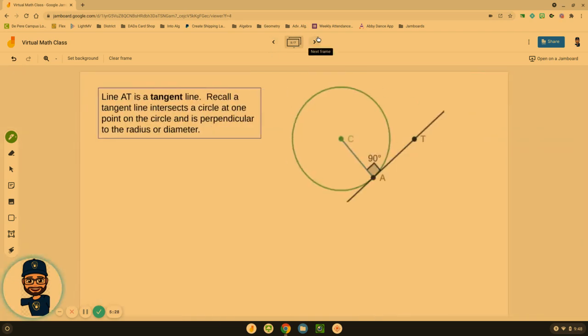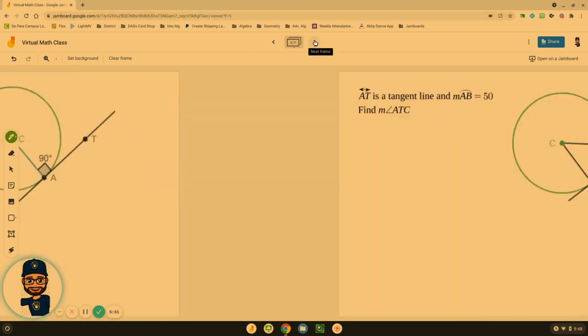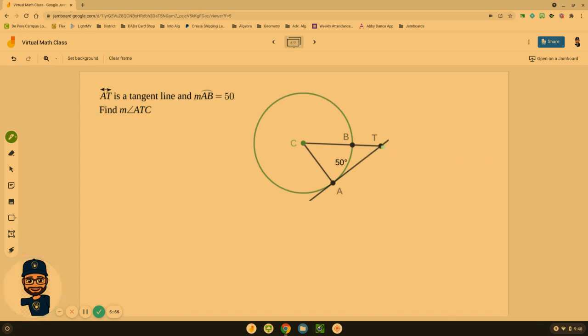Now let's take a look at what happens with a tangent line. Remember a tangent line intersects a circle at exactly one spot and is perpendicular to the radius or the diameter. So where the radius meets to that point it has created 90 degrees. That's an important thing to remember with any tangent line because there's a unique relationship that happens if we create a triangle. AT is a tangent line to the circle and arc A to B is 50 degrees, we need to find ATC.